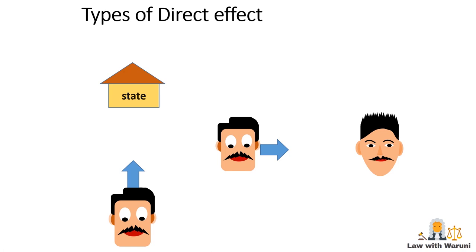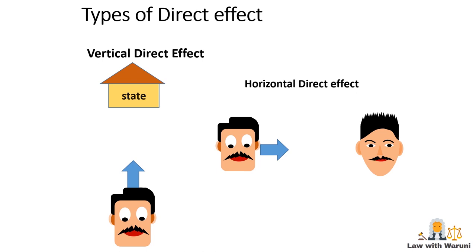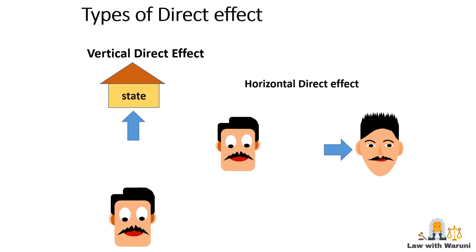There are two types of direct effect: vertical and horizontal direct effect. Vertical direct effect means a citizen relying on EU law to protect his rights against the state. Horizontal direct effect means a citizen relying on EU law to protect his rights against another individual.